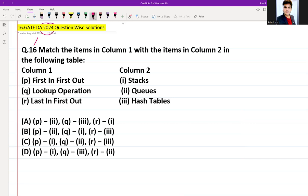The question is: match the items in Column 1 with items in Column 2. The columns are given, and believe me, this was a GATE question and the level of the question is so easy you cannot believe it.